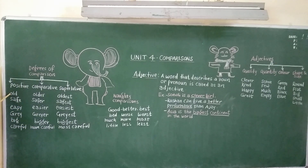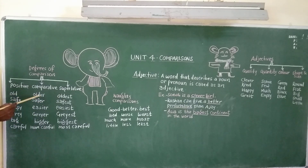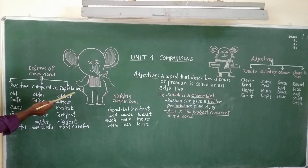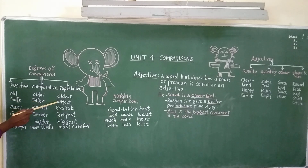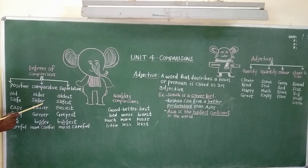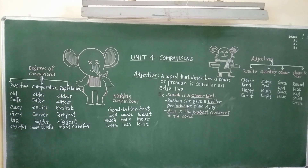Let us take an example: old, older, oldest. Here we add ER or EST. In comparative degree, we add ER to the positive form, and EST to the superlative form. Safe, safer, safest. Here, if E is there at the end of the word, then we add just R in comparative degree and ST in superlative degree.